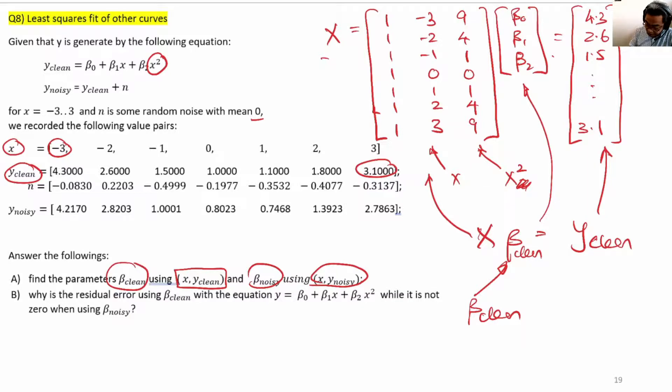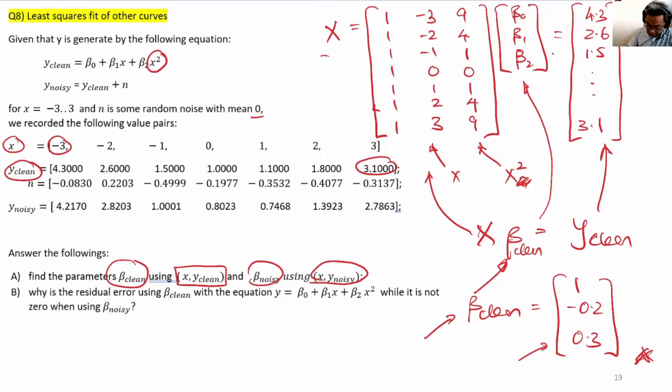β_clean, because we have put the values in ourselves, should be 1, minus 0.2, 0.3. In fact, when we solve for it, β_clean will come out to be exactly this because the system of equations is consistent.